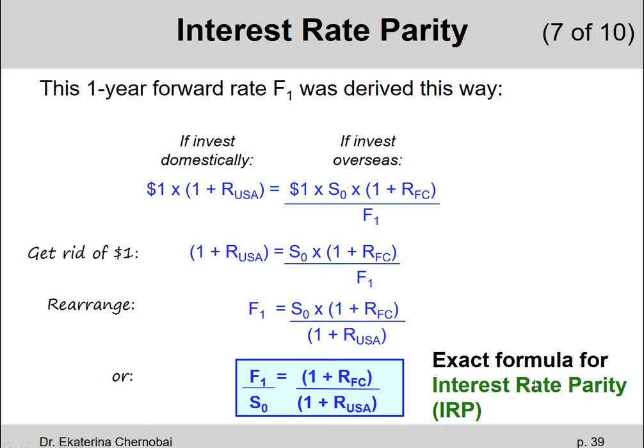This is the definition of the Interest Rate Parity formula that comes out of the example we just looked at, which shows how the forward rate should be determined in order for there to be balanced investments across different countries.